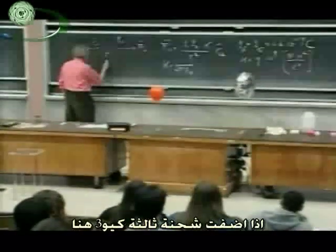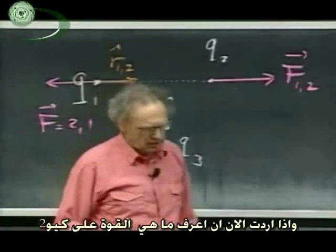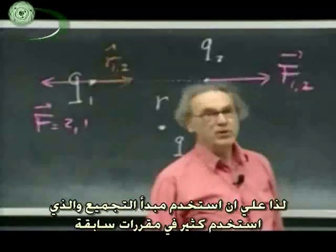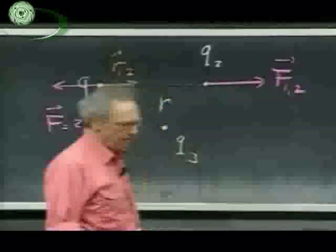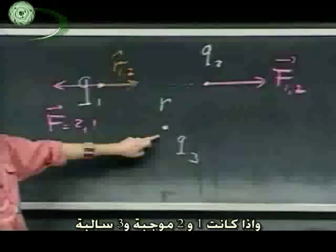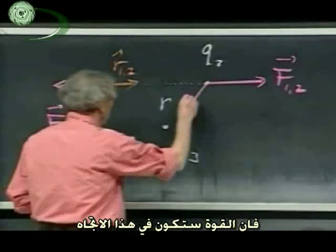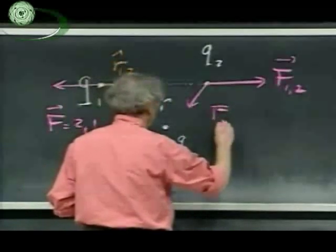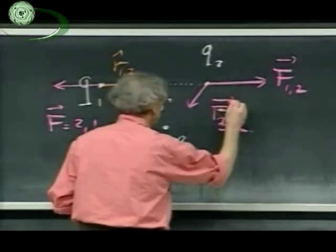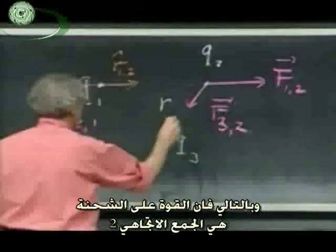If I add a third charge Q three, and I want to know what the force is on Q two, then I use the superposition principle, which we've used many times in 8.01. The net force on number two is the force due to number one plus the force from number three. If Q one is positive, Q two is positive, and Q three were negative, then the forces act in their respective directions, and the net force on number two would be the vectorial sum of these two.